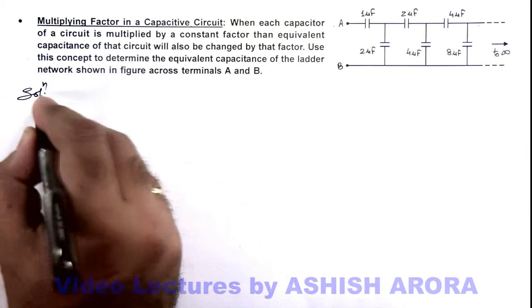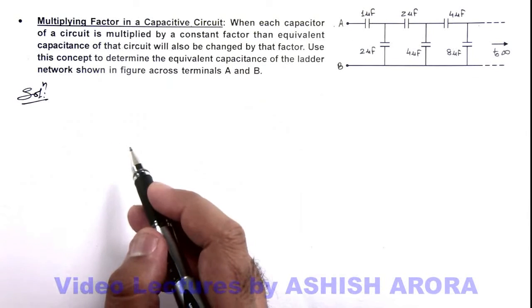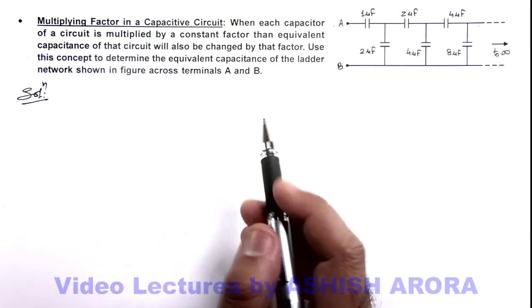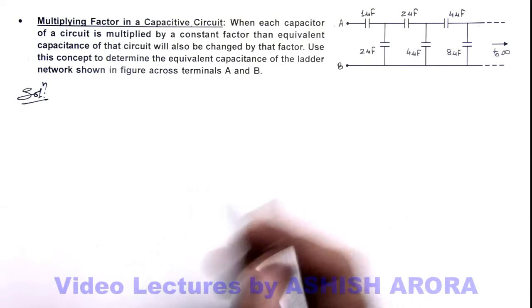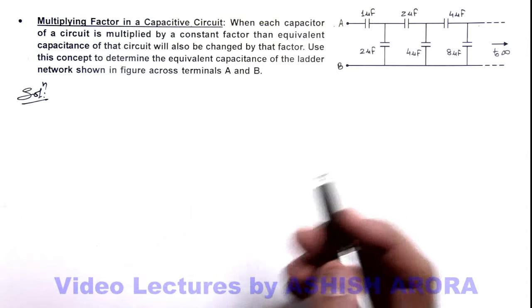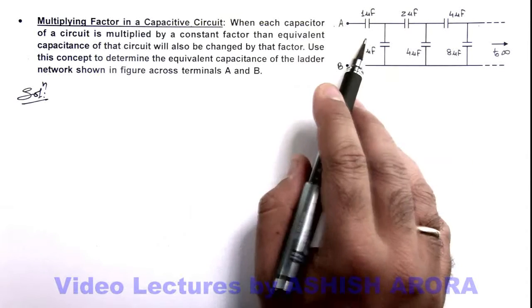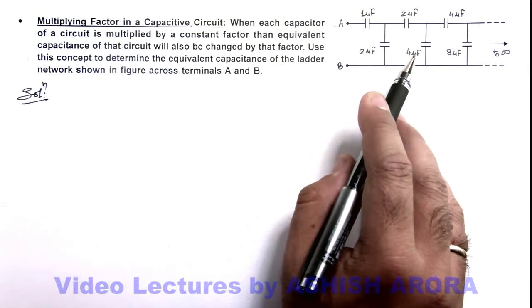We can see, as the concept states here, if all capacitors of a network are multiplied by a factor, say 5, then the equivalent capacitance will also become 5 times. So here we can see in this ladder network in every section the capacitances are getting doubled.